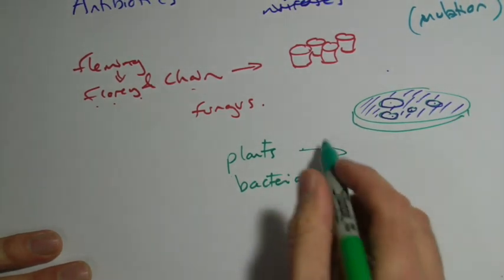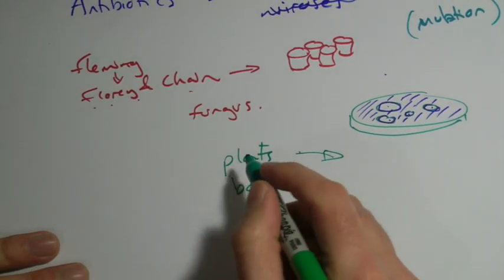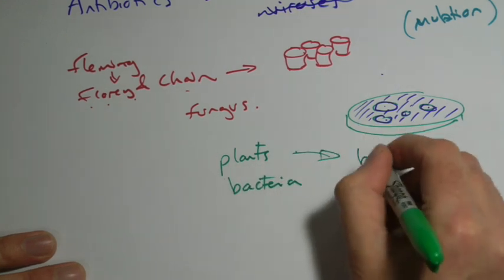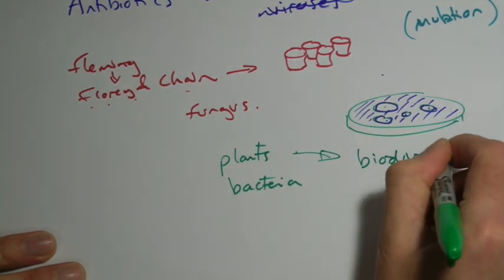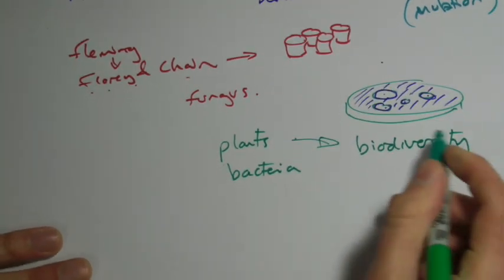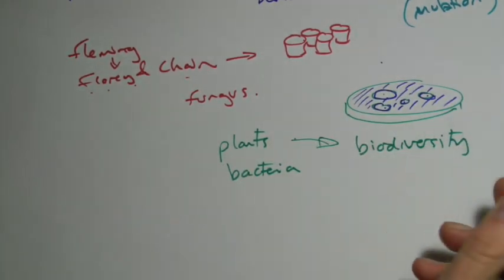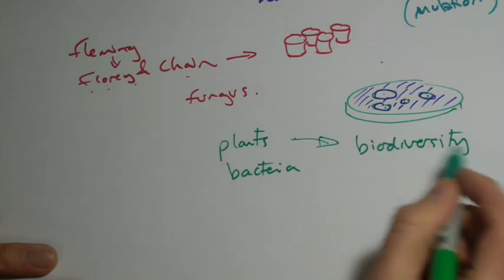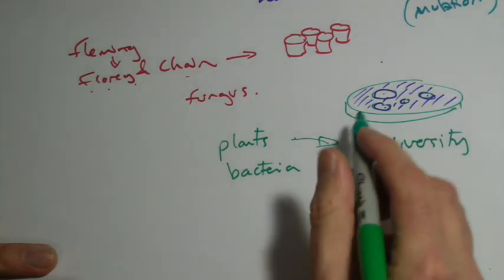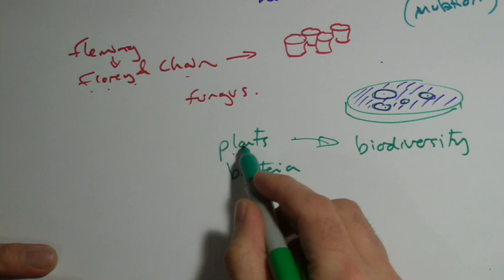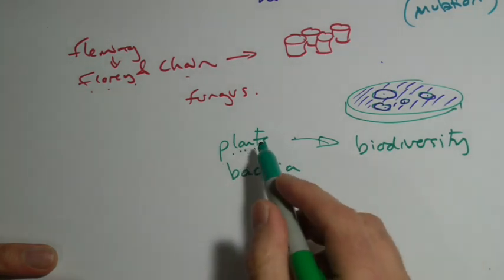This relates to a much, much later topic. One of the reasons that it's a good idea to maintain what we call biodiversity, which just means having lots of different species of plants and animals. If you kill off too many species of plants before we've had a chance to study them, we might miss out on the chance to find important new medicines.